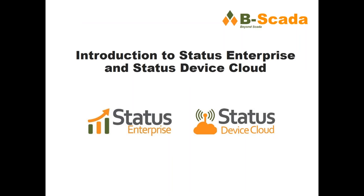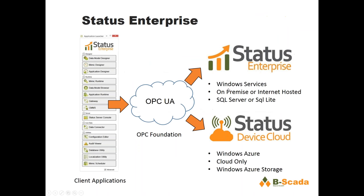Status is comprised of a couple of products. There's Status Enterprise, which will work behind the firewall or out on the internet. And there's also Status Device Cloud, which is a pure Windows Azure based monitoring solution. Status Enterprise uses SQL Server or SQLite as its database, and Status Device Cloud uses Azure storage as its database.